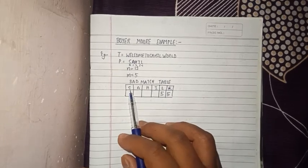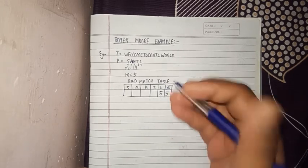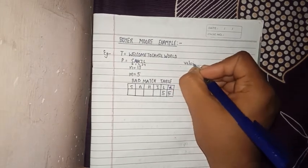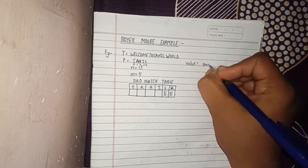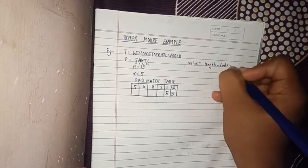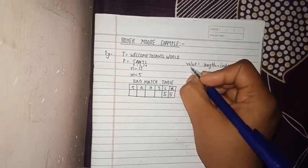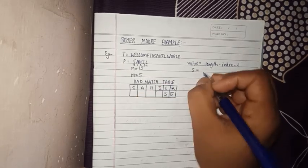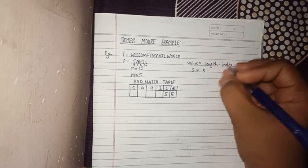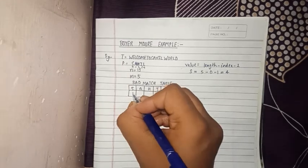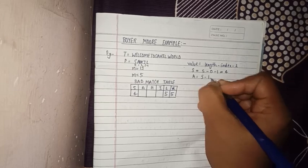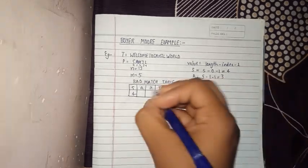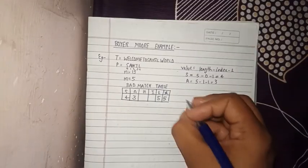For the remaining letters we use the formula: value = length minus index minus one. For 's', the length is five, the index is zero, so s = 5 - 0 - 1 = 4. For 'a', a = 5 - 1 - 1 = 3.